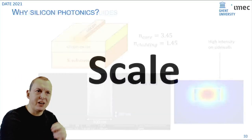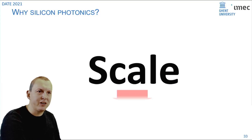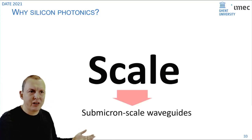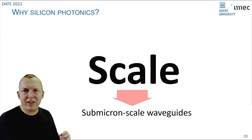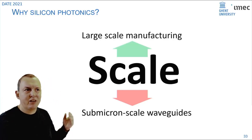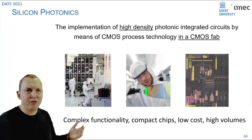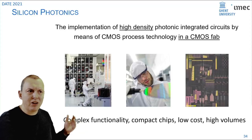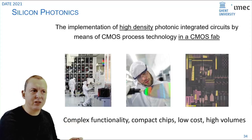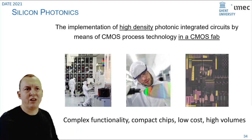That gives you a scale advantage because these submicron waveguides allow you to make really large circuits. But you get a second scale advantage with silicon photonics in that they can be fabricated with existing CMOS manufacturing technology. You get large scale manufacturing essentially as an extra bonus which allows you to make really complex circuits at low cost and potentially high volumes.